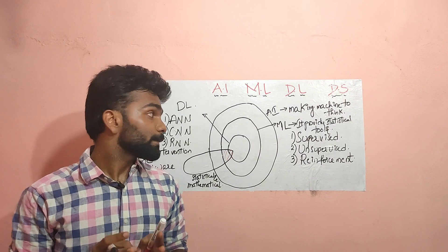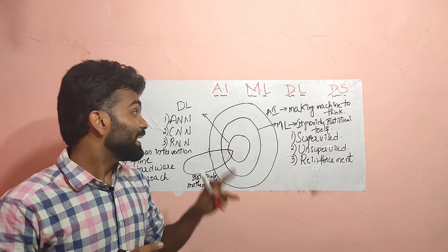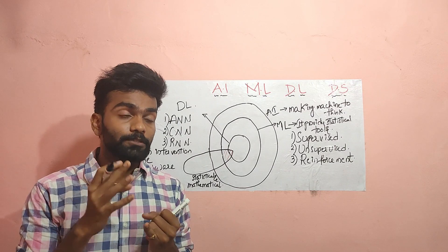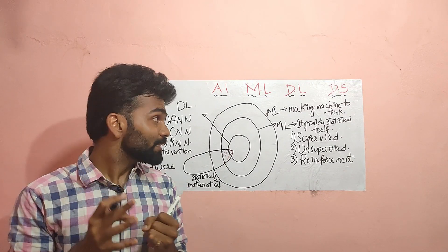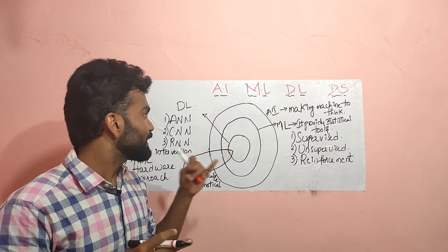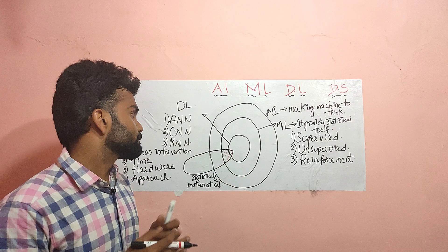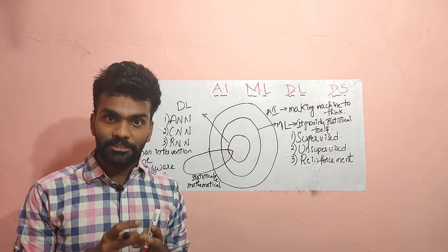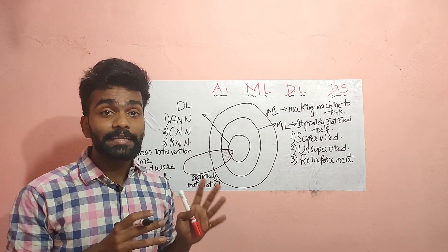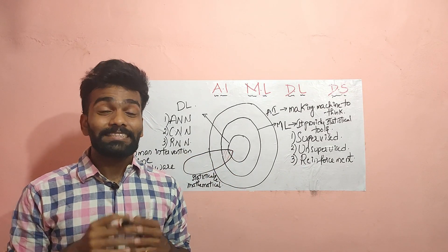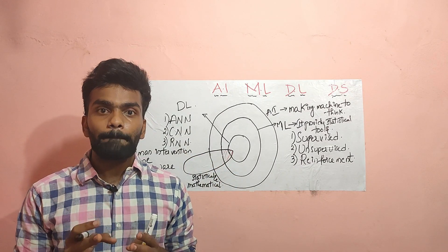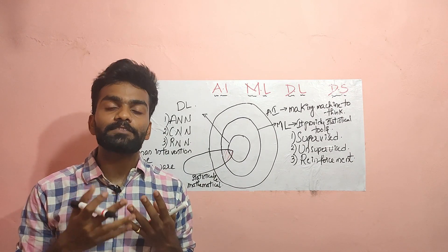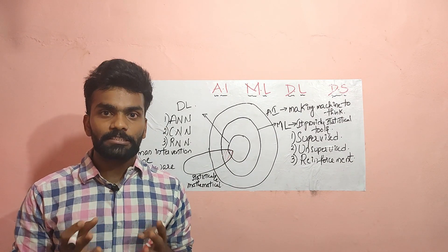One thing to understand is that AI is the final application which we make using ML, DL, and all these statistical tools. I hope you understood the difference between AI, ML, DL and data science. These are the basic terms you have to learn. Share with anyone you feel it would be useful for. Thanks for watching.